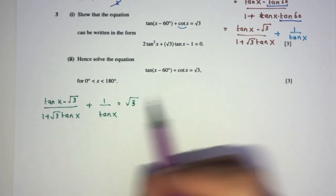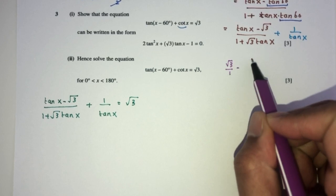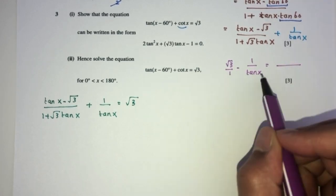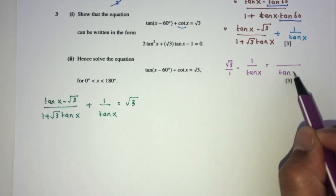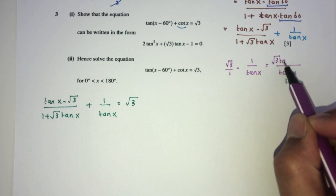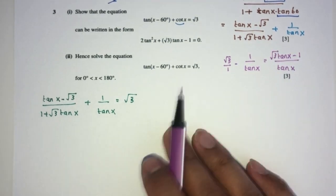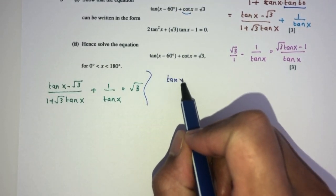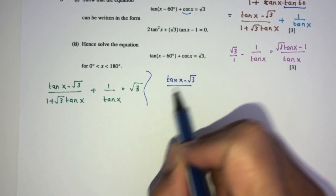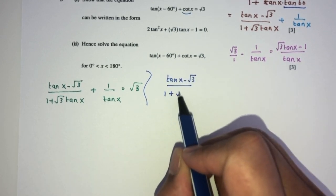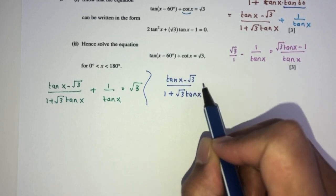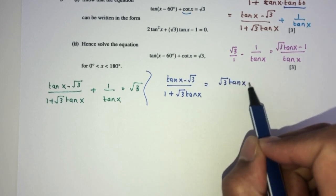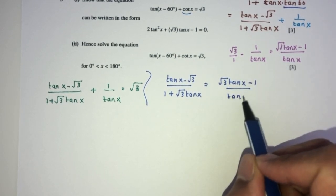You will have root 3 over 1 minus 1 over tan x equals root 3. Now we want to combine them together because the bases are different. We have tan x as the common base. That will become root 3 tan x minus 1. So basically, on this side it will be the same thing, which is tan x minus root 3 over 1 plus root 3 tan x equals root 3 tan x minus 1 over the value of tan x.